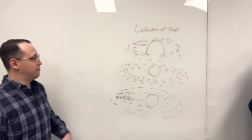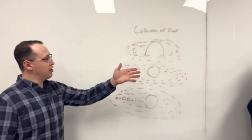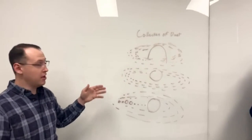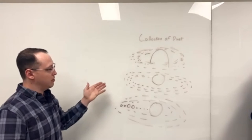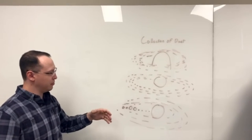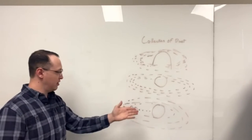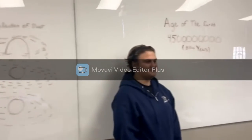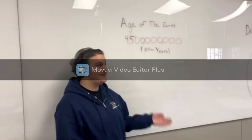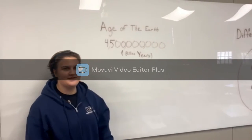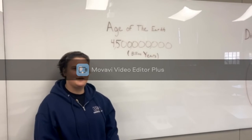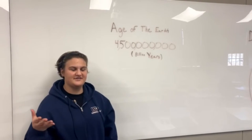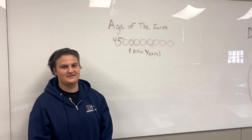As our solar system began to form, it started off as a rotating cloud of dust, gas, and debris. As this cloud sped up, it began to accrete into different forms, and that's kind of how we get our Sun and our planets. This process was estimated to be about 4.5 billion years ago, and how we date this is by rocks that we have dated on Earth, and by dating rocks and crystals that are not from Earth's surface.